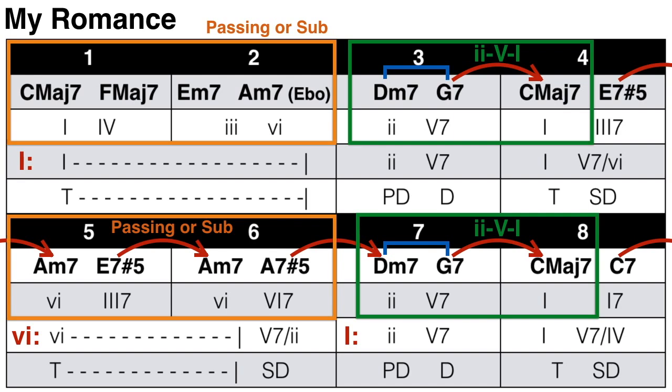At the end of bar 6 we have another secondary dominant, tonicizing the D minor 7 chord. Then in bars 7 and 8 we have a 2-5-1 in C — so we've modulated back to C major. To summarize: section A starts in C major with a tonic prolongation followed by a 2-5-1, then modulates to A minor for two bars, then returns to C major for the final two bars with another 2-5-1. This is followed by a secondary dominant tonicizing the F major 7, which is the first chord of section B.